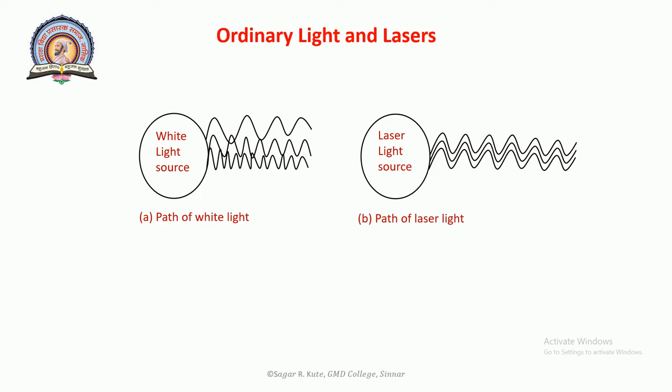Fourth, intensity of ordinary light decreases with distance as it travels in the form of short pulses of small length and short duration, whereas laser light travels in only one direction parallel to the optic axis. Hence laser light is highly intense.